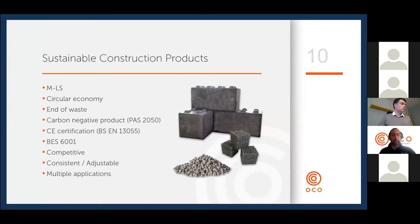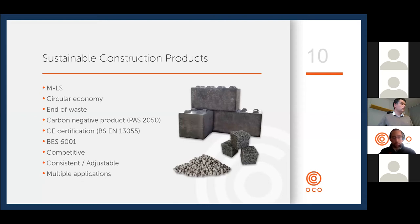The product we produce — manufactured limestone — has achieved end-of-waste status and is a carbon-negative product according to PAS 2050. We certify the product to the British Standard for lightweight aggregates, and because of its credentials it is extremely good for customers in terms of achieving BES 6001, which relates to sustainable sourcing of raw materials. We are competitive, and as a manufactured material we can adjust the process to ensure consistency and also vary parameters such as density, size, and strength. Multiple applications exist — predominantly masonry blocks, but also screeds and asphalt.